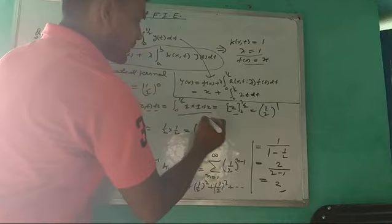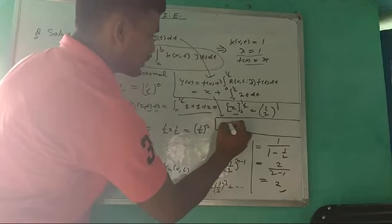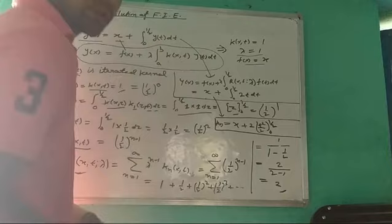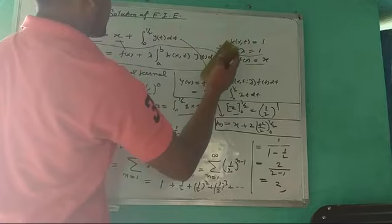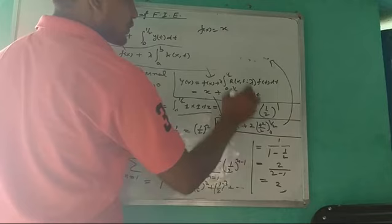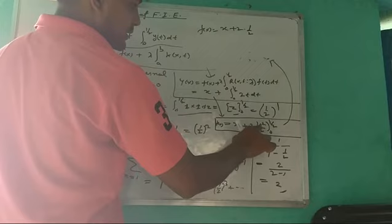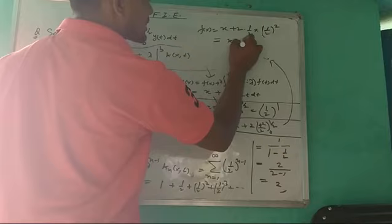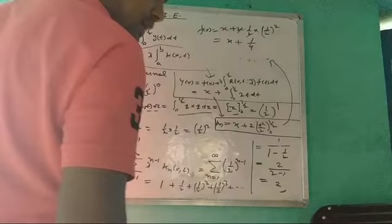Evaluating the integral: y(x) = x + 2 · [t²/2] from 0 to 1/2 = x + [t²] from 0 to 1/2. Applying the limits: (1/2)² − 0 = 1/4. Therefore y(x) = x + 1/4. The answer to this question is x + 1/4.